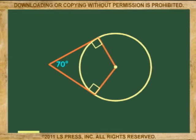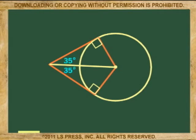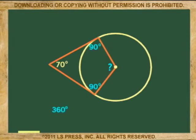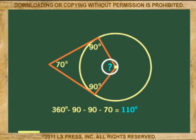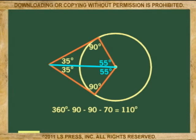This outside angle was determined to be 70 degrees. So if this angle was bisected, then in the triangle they represent 35 degrees each. Can you guess how large this central angle is? We know that the sum of the angles of a quadrilateral is 360 degrees, and the angles at the tangent points are always 90 degrees. So 360 minus 90 minus 90 minus 70 equals 110 degrees. This central angle is 110 degrees.